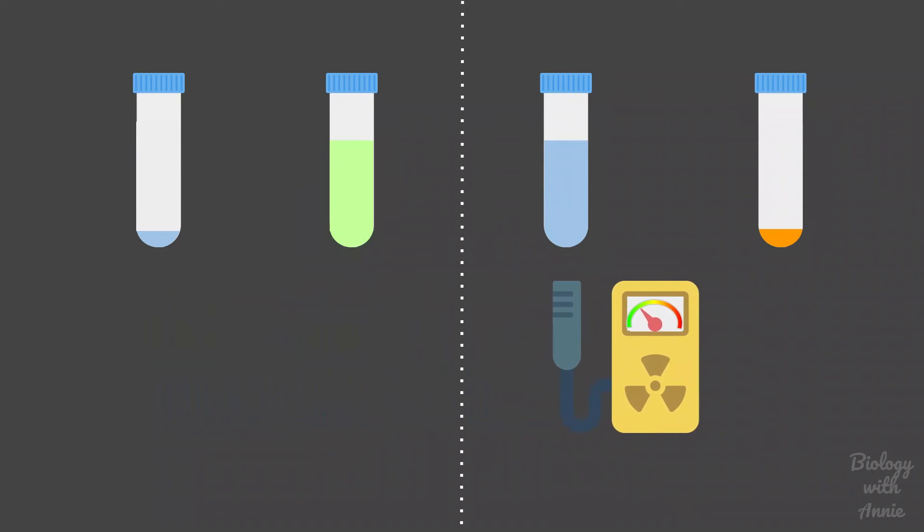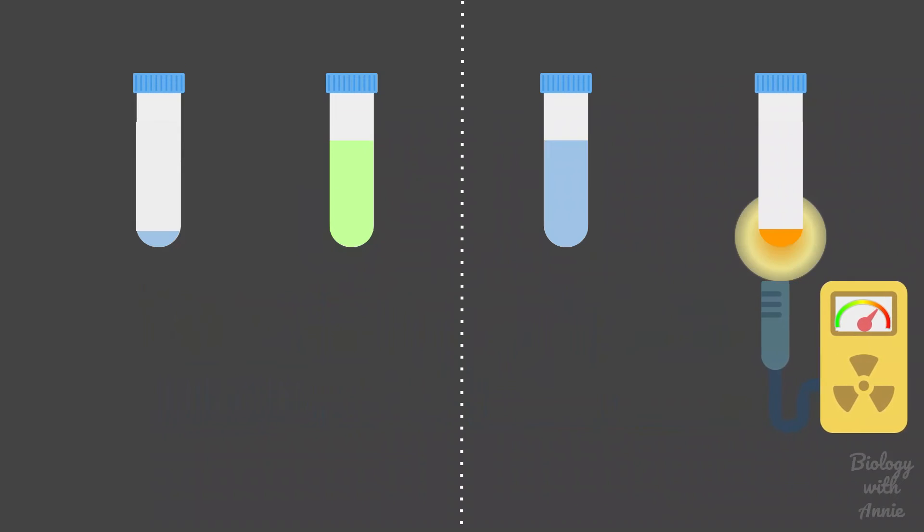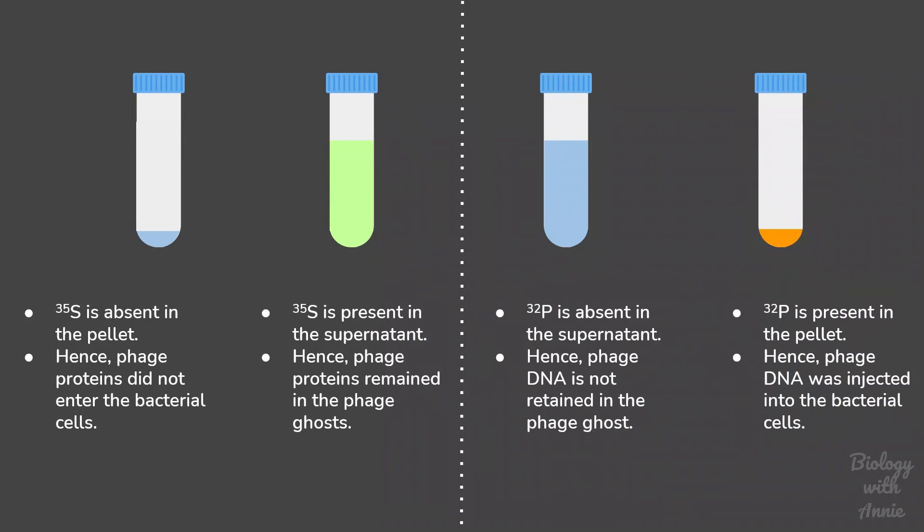Analysis using this device revealed that most of the radioactive sulfur remained in the phage ghost, while most of the radioactive phosphate entered the bacterial cell.